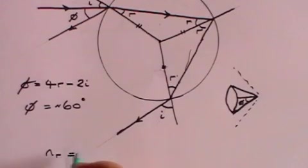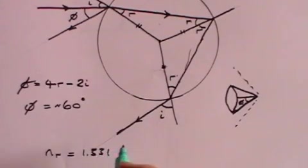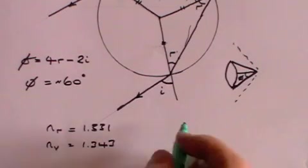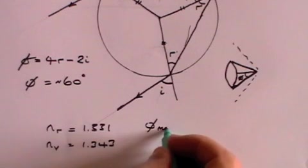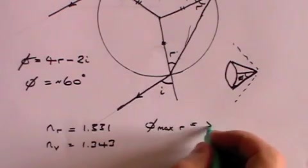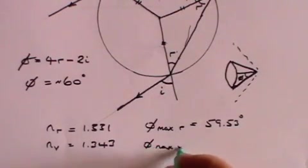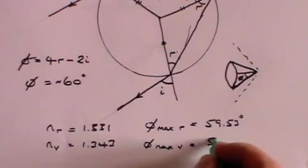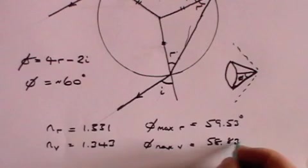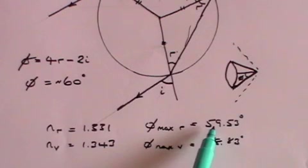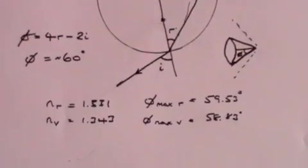For red light, the refractive index is 1.331. For violet light, the refractive index is 1.343. And that means that phi max for red is about 59.53 degrees. But phi max for violet is 58.83 degrees. The red has a higher maximum phi than violet.